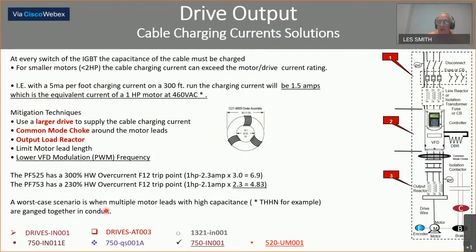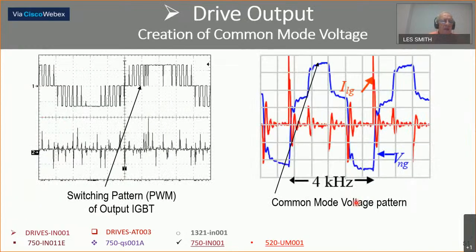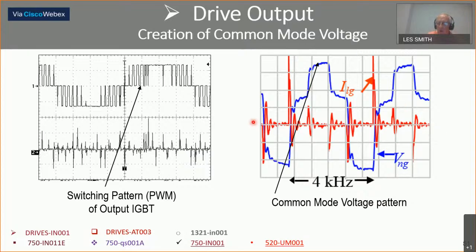Here's a waveform showing the PWM and the common mode voltage. The problem is the fast rise time — this is more vertical these days than it used to be. We used to have milliseconds; now we have nanoseconds in switching speed. So our problems are worse than they were yesterday, and will likely be worse tomorrow as switching speeds continue to increase.